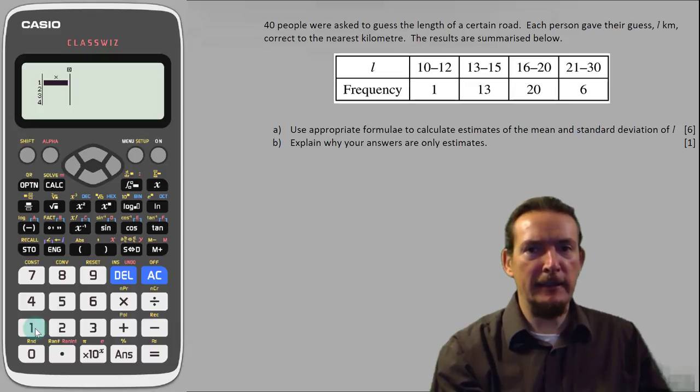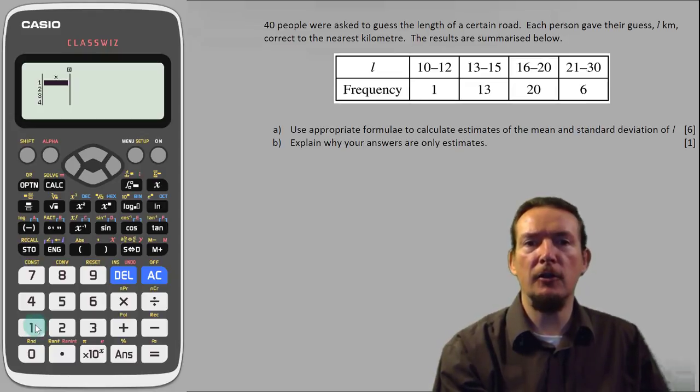Now the default here is one column allowing you to enter a list of numbers. We don't want to type in all 40 numbers individually so we need to tell the calculator to add a second column for frequency.